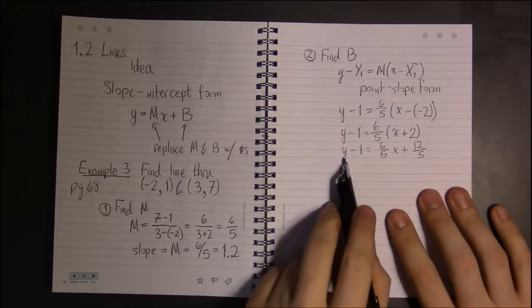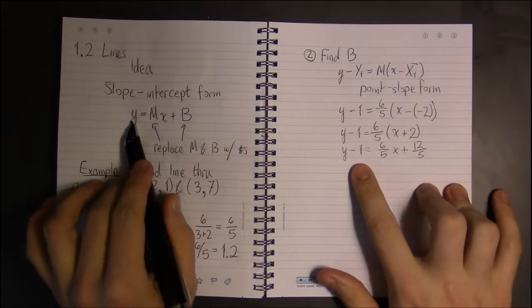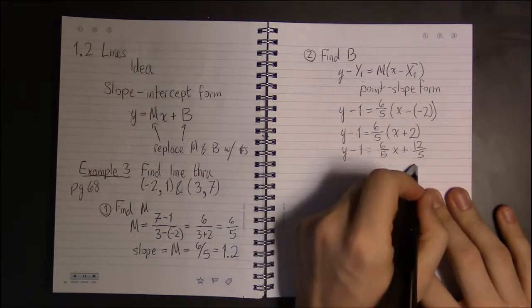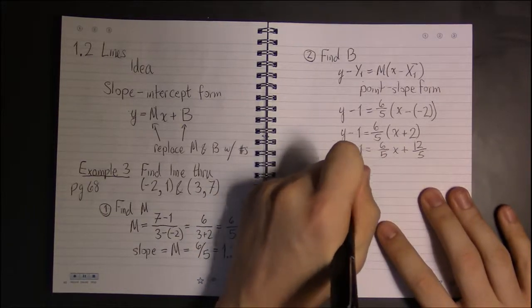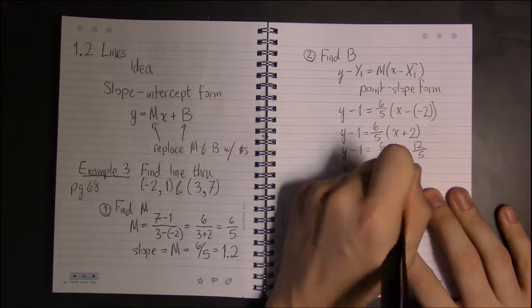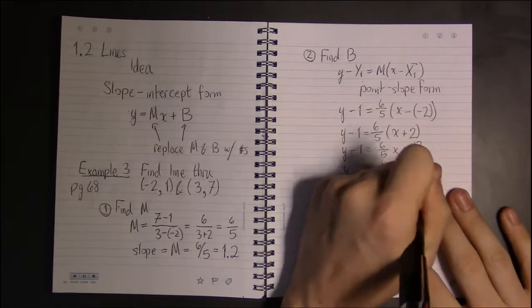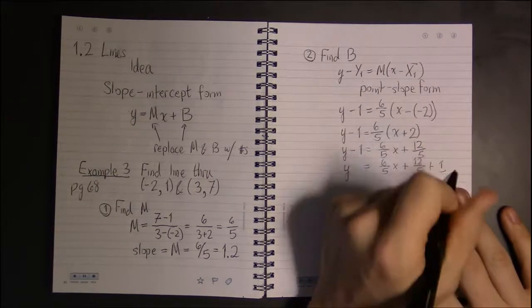Now, all we need to do to finish up, to get it to look like this, is to get y by itself. So, add 1 to both sides. And this is y equals 6/5 x plus 12/5 plus 1.